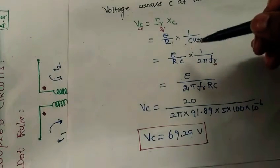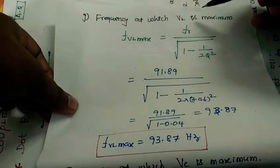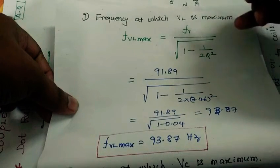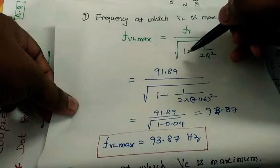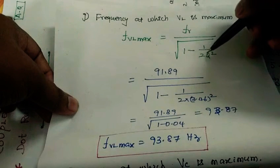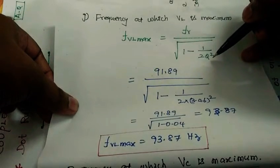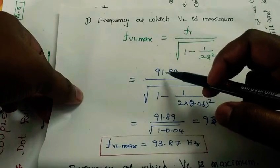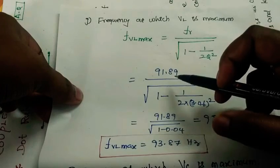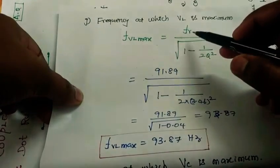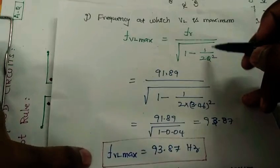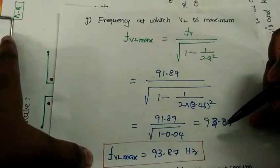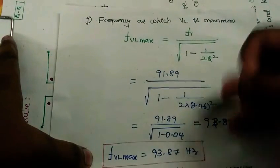Next, the frequency at which VL is maximum, that is voltage across inductance is maximum. The formula is FR divided by square root of 1 minus 1 by 2 into Q square. Q factor value is 3.46 and FR is 91.89. If we simplify, the frequency at which VL is maximum is 93.87 hertz.